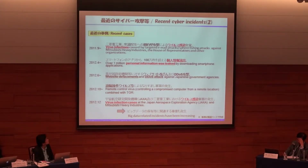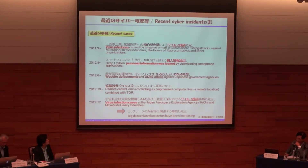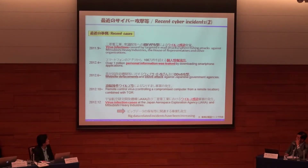Also in 2011, in September, Mitsubishi Heavy Industry, as well as the House of Representatives, was attacked by targeted email or spear-phishing email and infected. And in 2012, over 1 million personal information was leaked by downloading smartphone applications. There are lots of cyber incidents and attacks. Cyber threats have become more large-scale, advanced, and sophisticated, and some occur because of holding big data. As the value of big data increases, risks surrounding big data are also increasing.